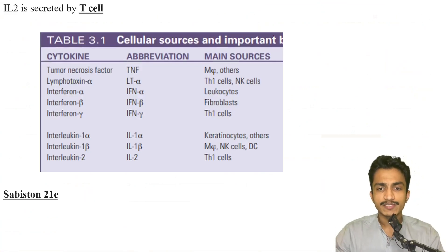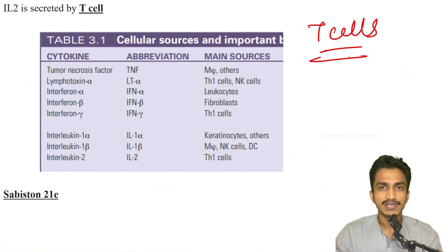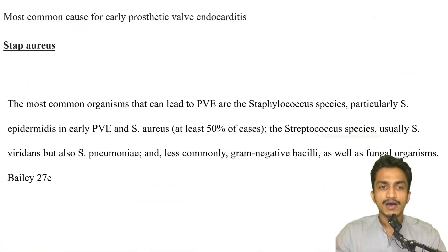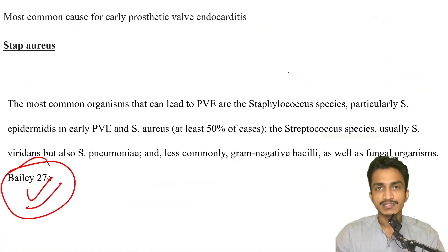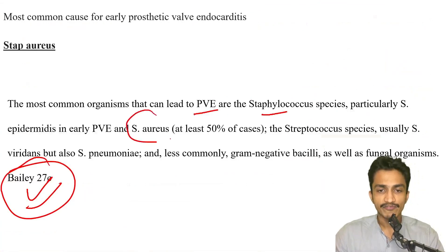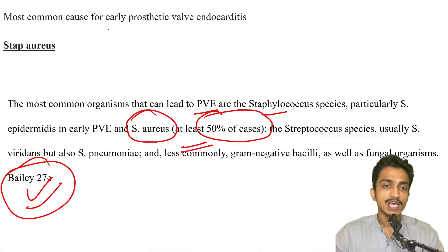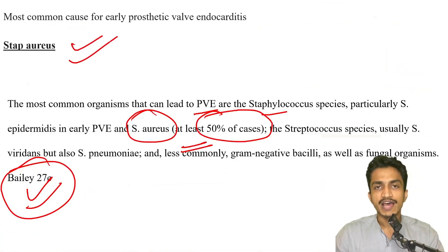Very straightforward question: IL-2 is secreted by T cells — not much discussion here, very commonly asked. IL-2 is the most favorite. For the most common cause of early prosthetic valve endocarditis, this is taken from the CTVS portion of Bailey, which is very important. The most common organism is Staphylococcus, most commonly Staph aureus, seen in 50% of cases. So the answer is Staph aureus.